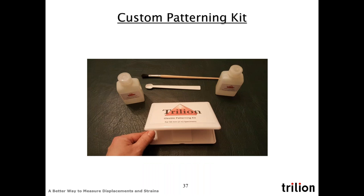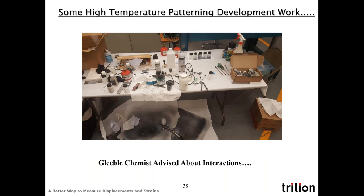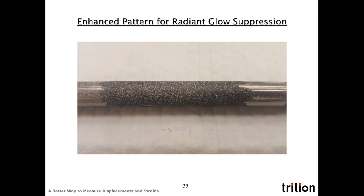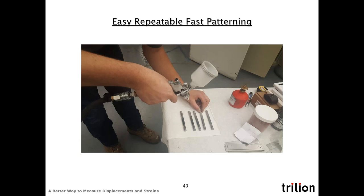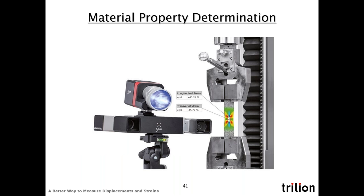Trillian then developed a kit that could be delivered together with the Gleeble machine — the goal being fast, easy, repeatable patterning. This was another more major development session. Round specimens at different angles and going to higher temperatures demanded improved patterning, so we had the Gleeble chemist advising us about interactions and what are allowable and not allowable materials. That led to success: now we have a black high-temperature background coating with white dots, which helps suppress the radiant glow. Gleeble themselves came up with a fast, easy way to deliver that optimum pattern.